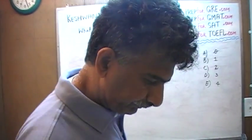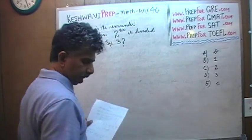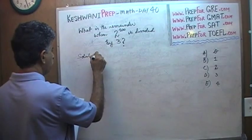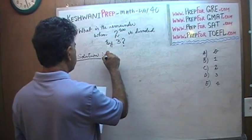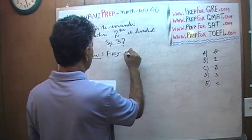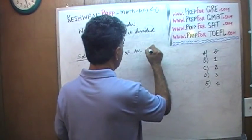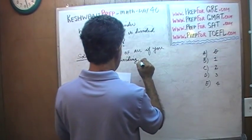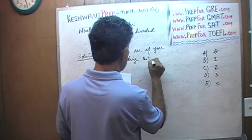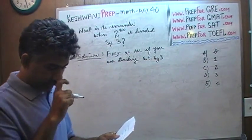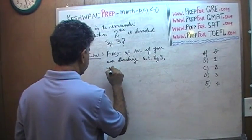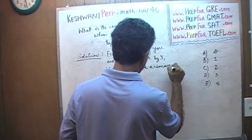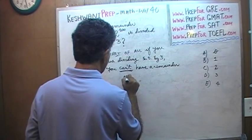Well, let's take a look at it. First of all, before you do any work at all, you should realize that if you are dividing something by 3 — if you are dividing a number by 3 — you cannot have a remainder of 3 or more.